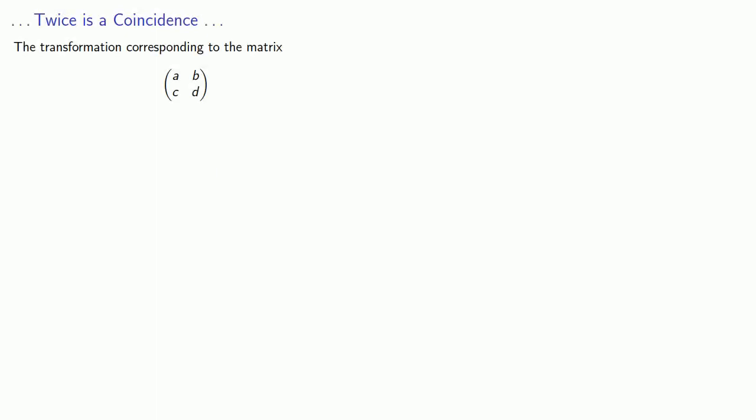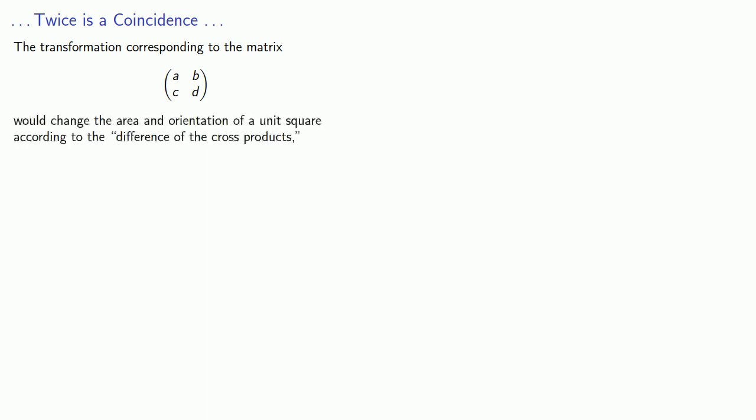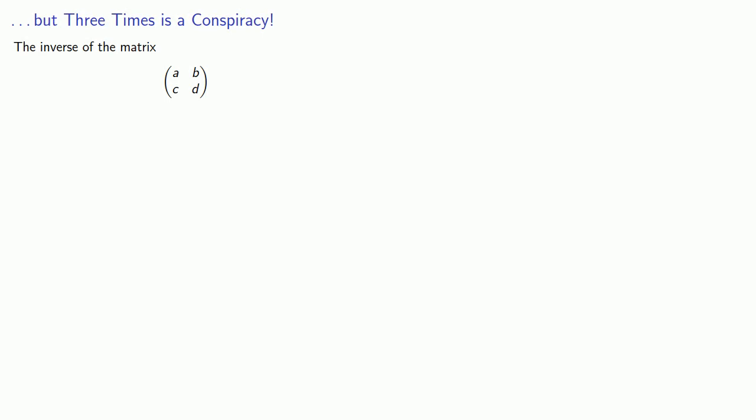Meanwhile, if we consider the transformation corresponding to the same matrix, we find that this would change the area and orientation of a unit square according to the difference of the cross-products ad minus bc. And when we found the inverse of a matrix, we found that the inverse relied on dividing by the difference of the cross-products ad minus bc.